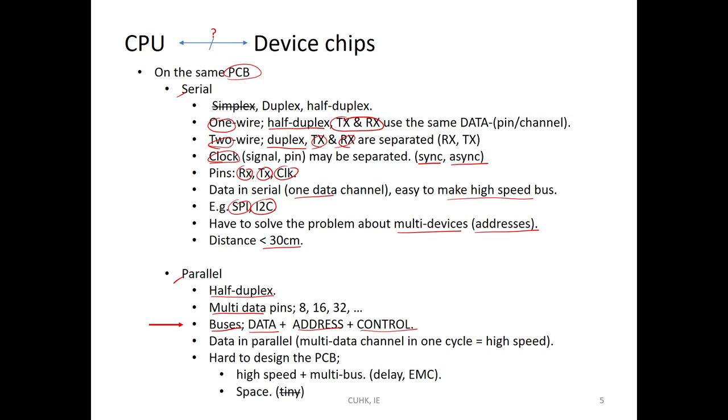Because multi-data pins means multi-data channel, then each cycle you can send a lot of data. So this is high-speed. But in the PCB design, it is very hard for high-speed because of the delay. You have to ensure the data arrives to the end device at the same time. If you use multiple pins, for example, 32 pins means that the length or the trace all are the same. Another problem is the EMC problem. You can see the multiple pins, 8 pins or 32 pins, will consume the space. So it is impossible to build a tiny device.